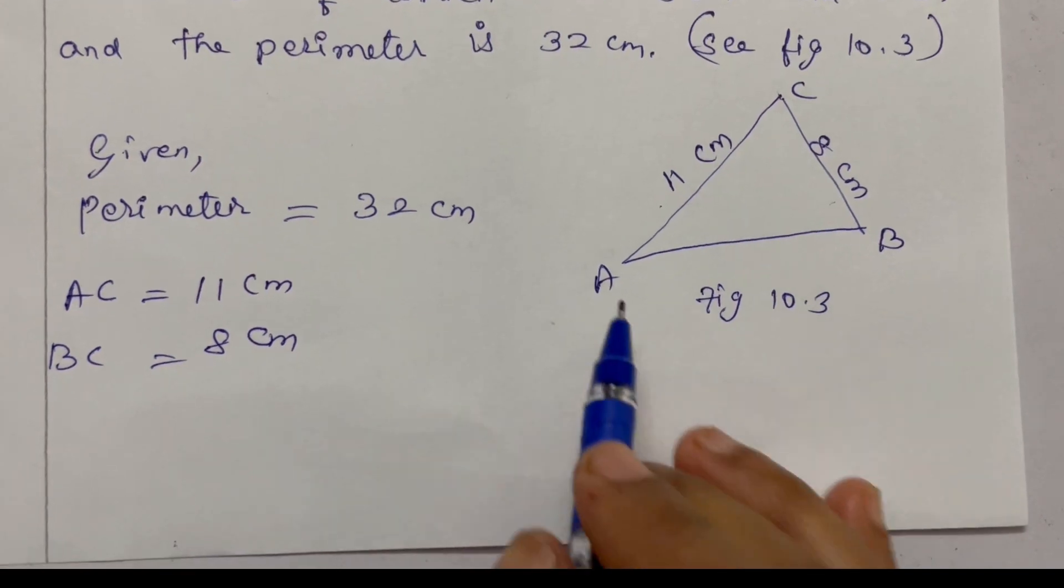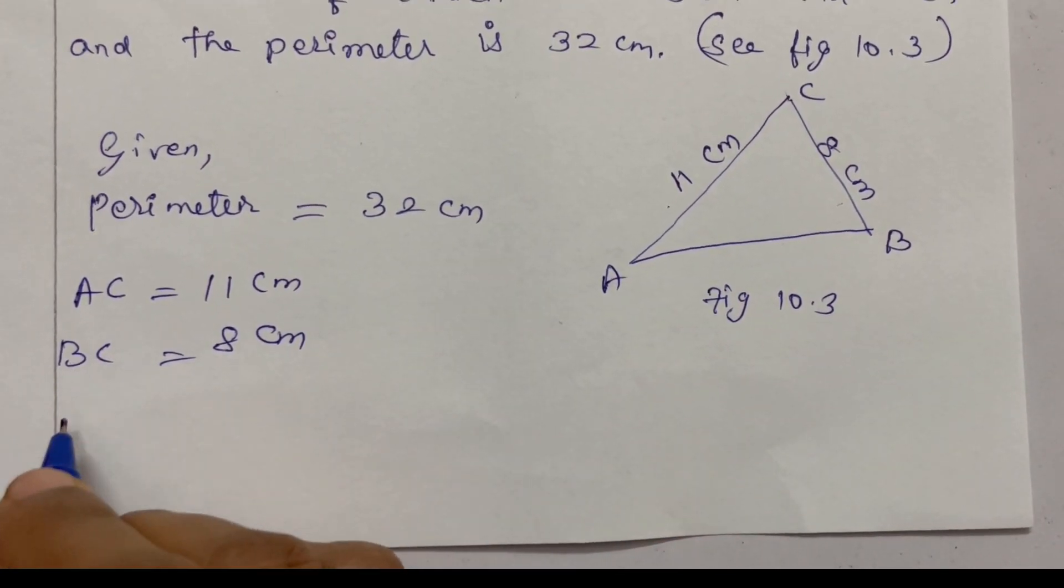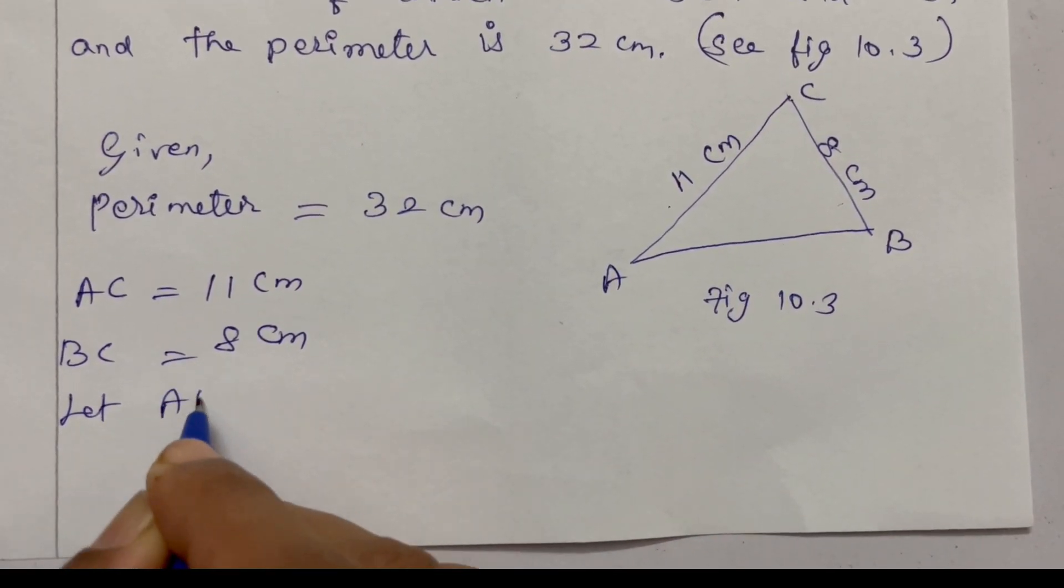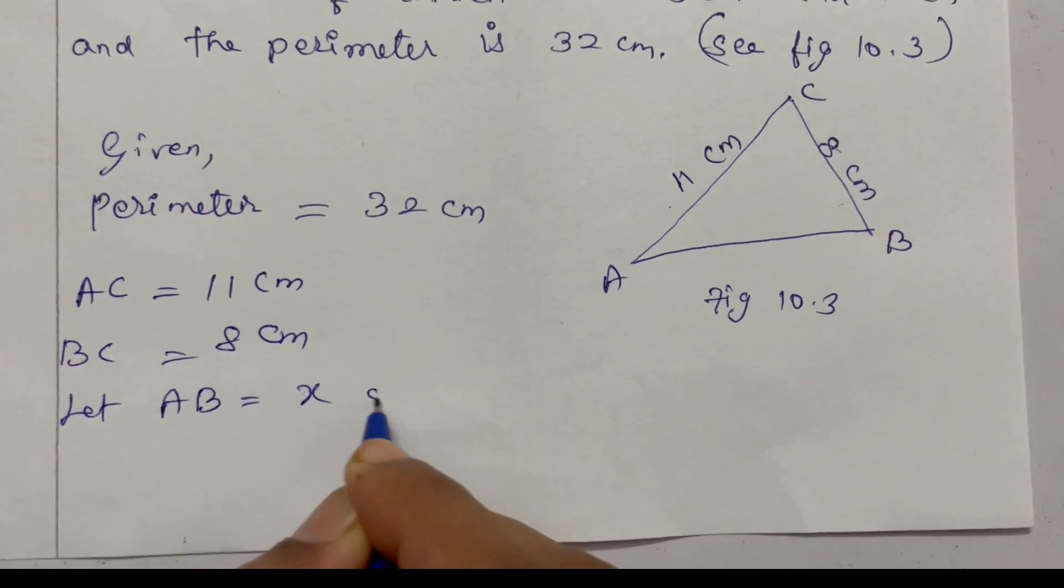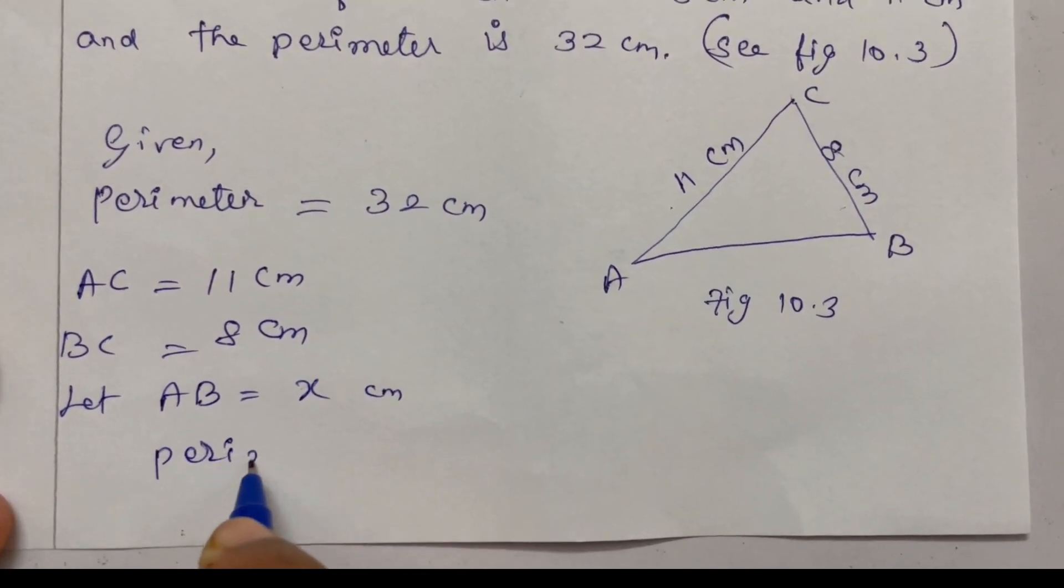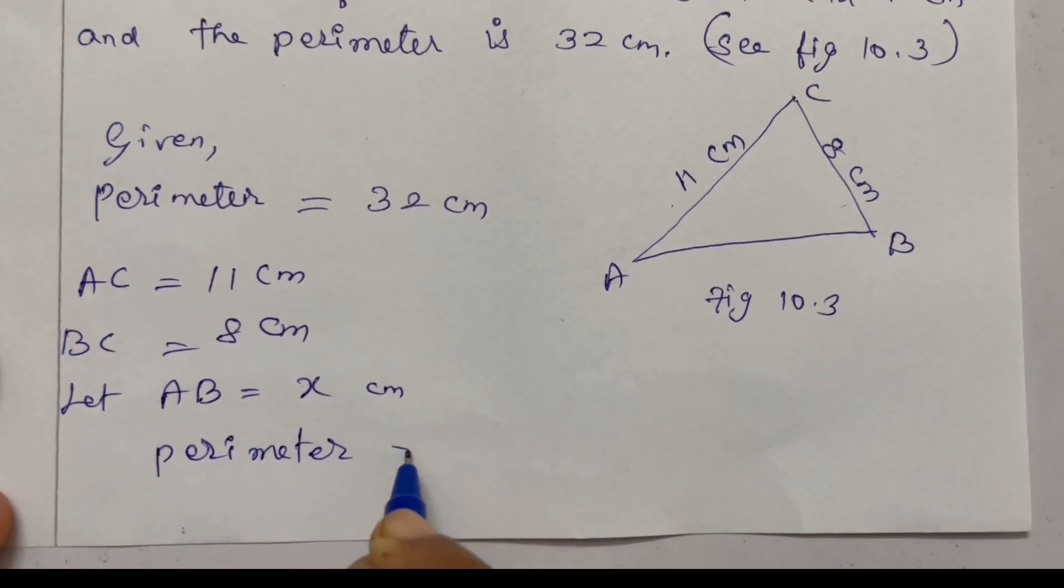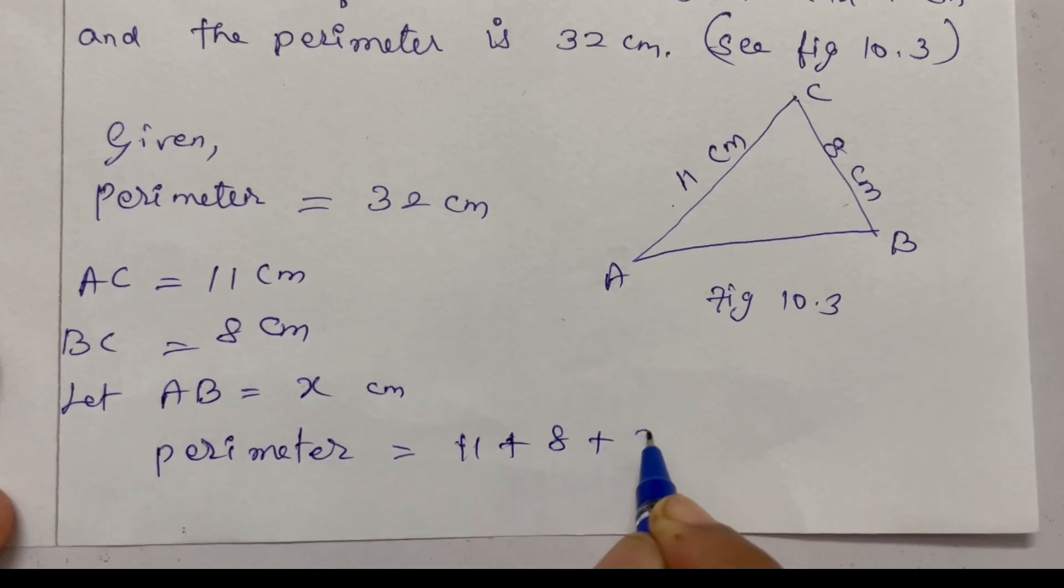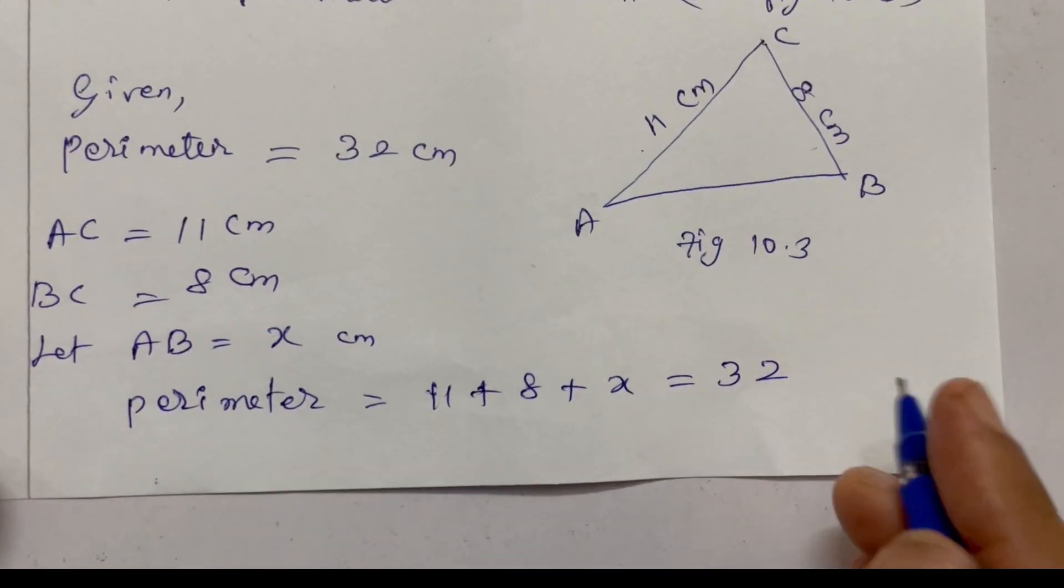Let AB equal to x cm. Perimeter equal to 11 plus 8 plus x equal to 32 cm.